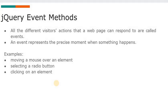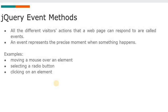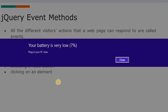jQuery event methods — all the different visitor actions that a web page can respond to are called events. An event represents the precise moment when something happens, for example clicking a button, mousing over a paragraph, double clicking, clicking an image, or selecting a tag. Examples include moving the mouse over an element, selecting a radio button, and clicking on an element.